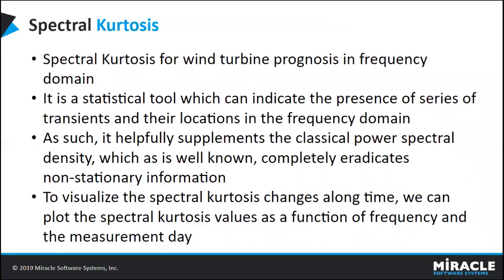Spectral Kurtosis is a statistical tool that can indicate the presence of a series of transients and their locations in the frequency domain. It is used to find the most powerful features in the dataset, eradicating non-stationary information. It is a function of frequency and the measurement day of the wind turbine dataset.